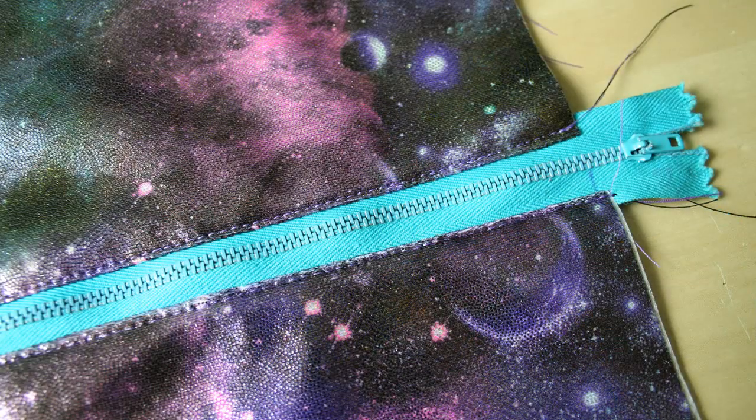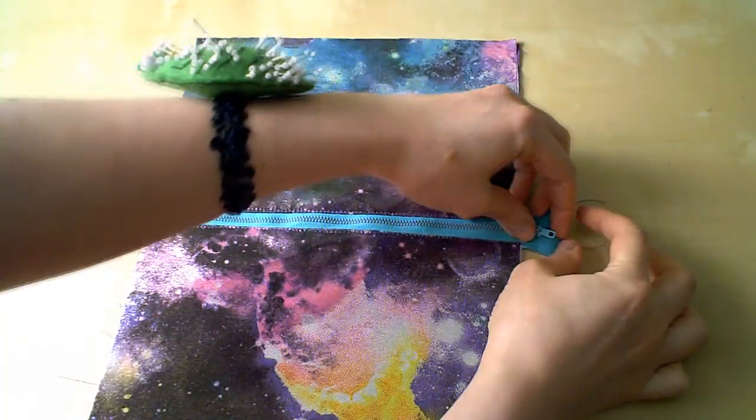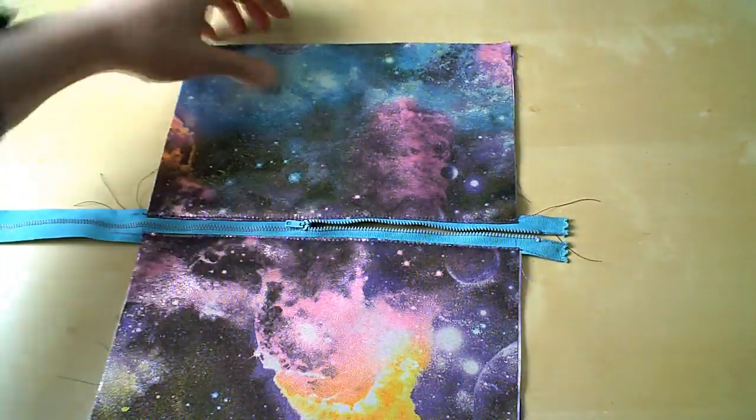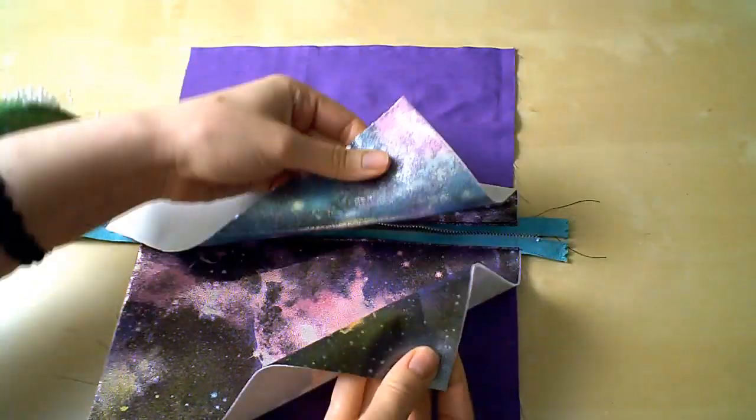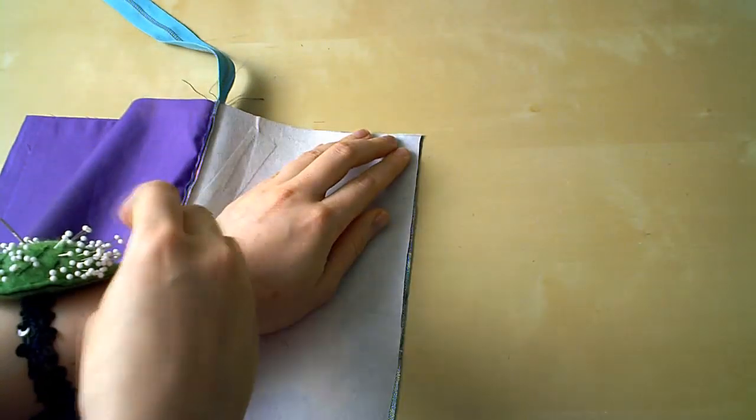At this point, I like to topstitch that seam along the outer fabric edge, but this is optional. It's important at this point to unzip the zipper about half way, not all the way. You want to pull somewhere in the middle of the bag.